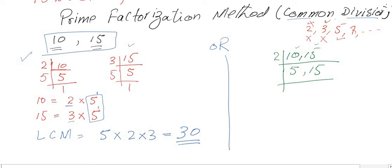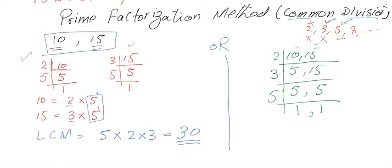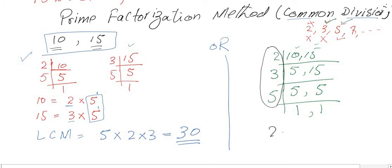Next we try the prime number 3. 5 is not divisible by 3, so we leave it as is. 15 divided by 3 gives 5. Then we divide both by 5: 5 ÷ 5 = 1 and 5 ÷ 5 = 1. We continue until we reach 1 and 1. Now multiply the divisors on the left: 2 × 3 × 5 = 30. So the LCM of 10 and 15 is 30.